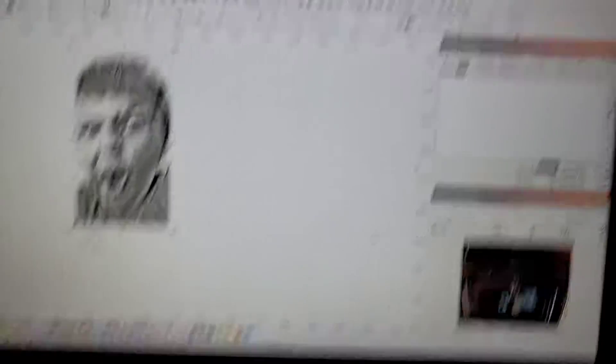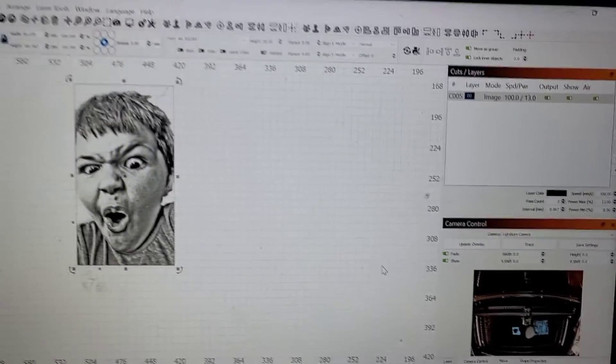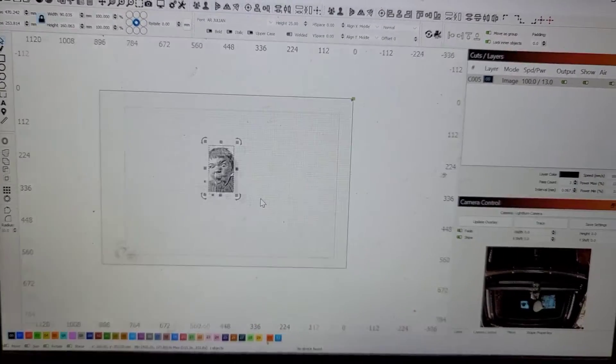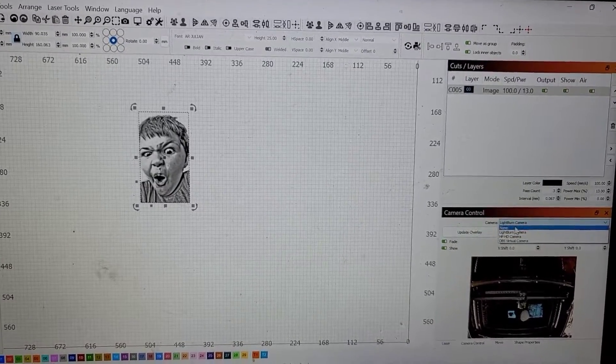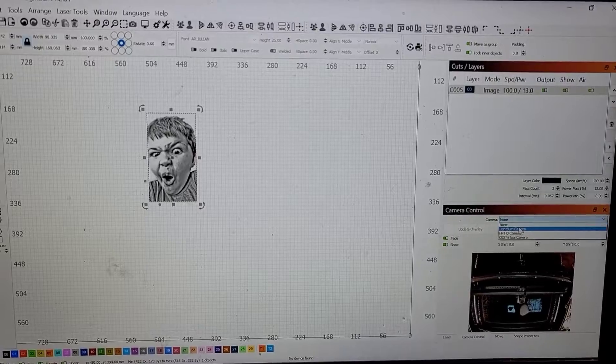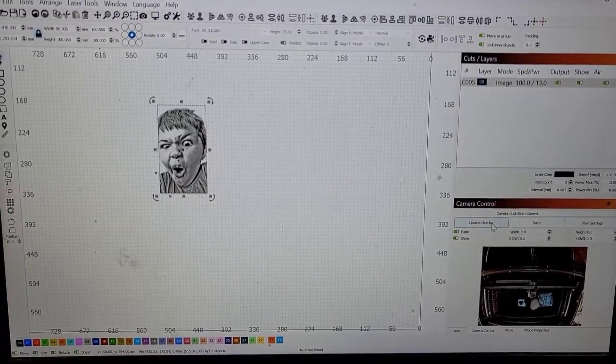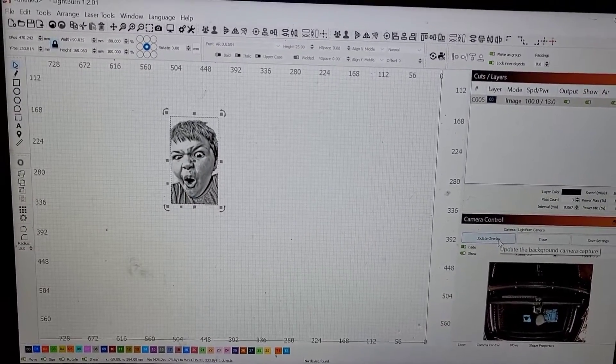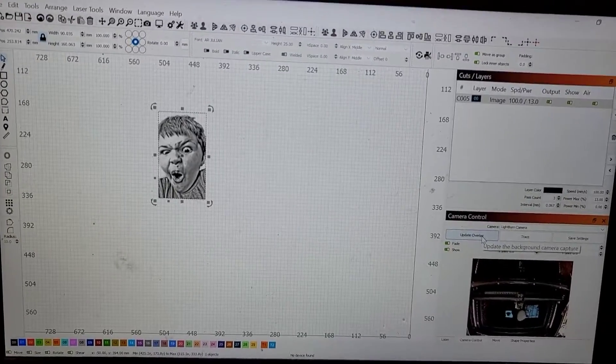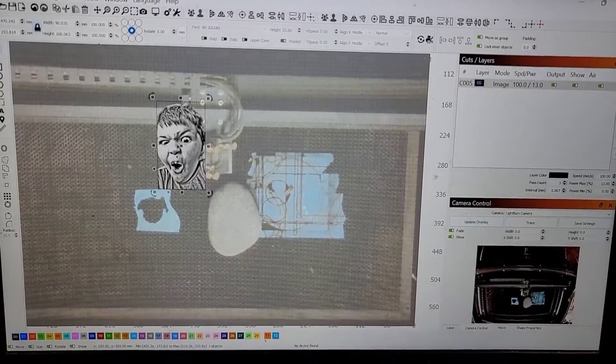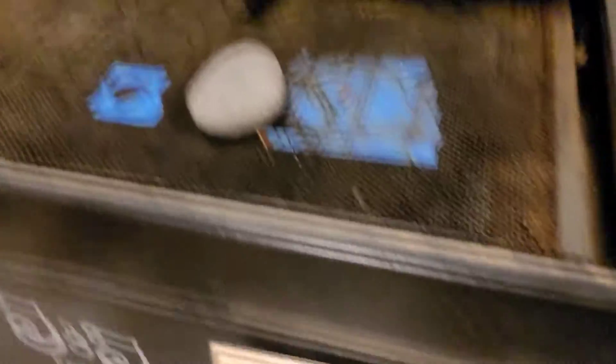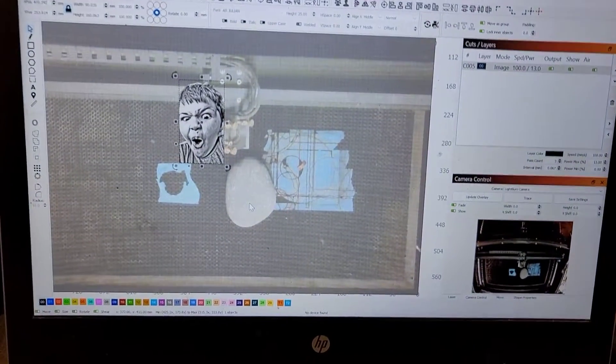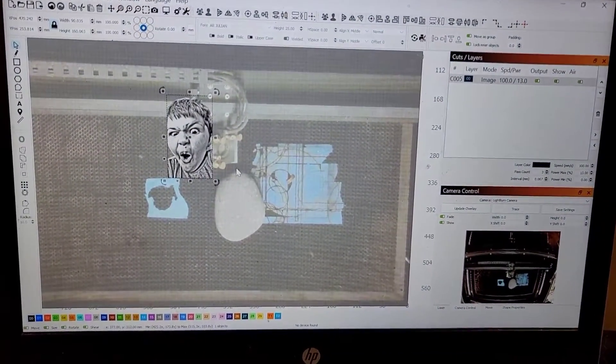To get this thing rolling I got this imported on my board here. Now I have a camera installed on my Light Burn, this is a super cool feature. If you can afford to get one and get it working, it's definitely worth it in my opinion. It'll help you place stuff on the board. We're going to go ahead and update the overlay and you can see it takes what is on my table here, sticks it right on the board and it's fairly accurate.